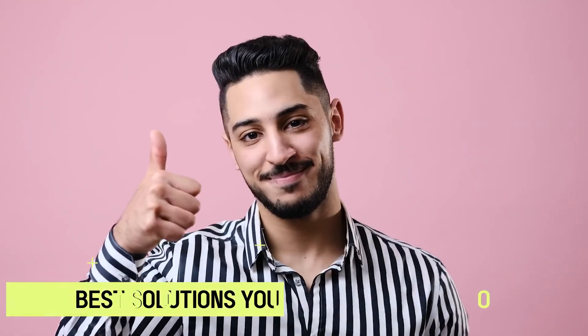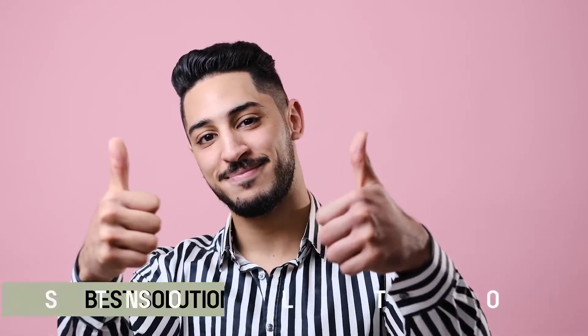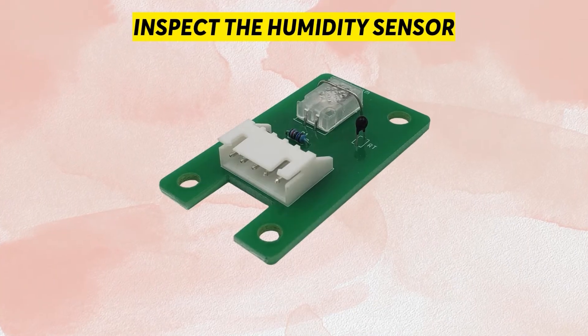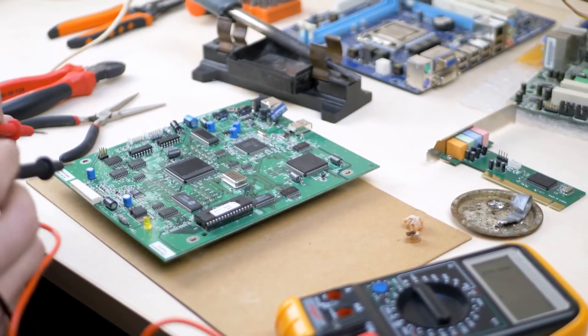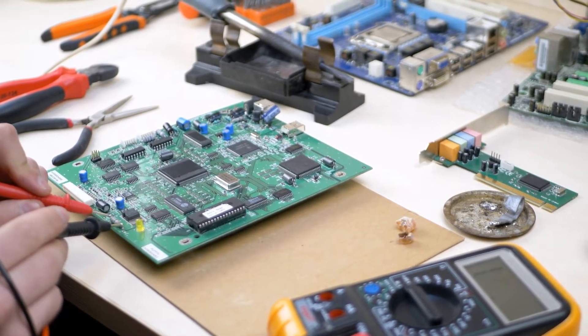Now, let's look at the best solutions you can apply to fix the E9 error. Inspect the Humidity Sensor: Doing this can help you determine whether the error results from a faulty humidity sensor. This is done by checking the resistance of the dehumidifier wires.